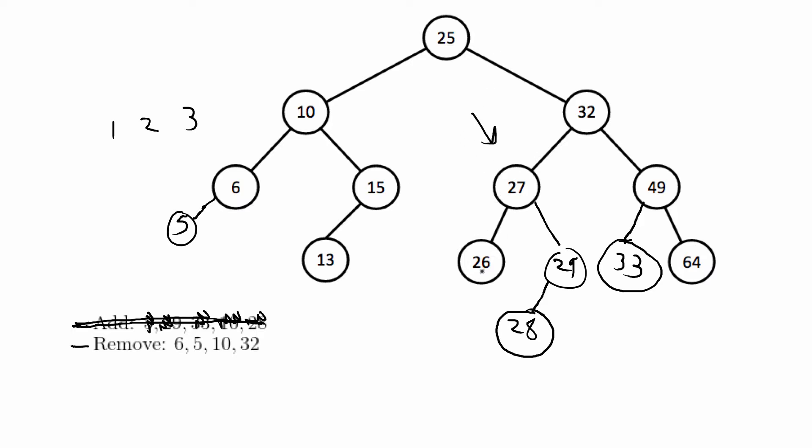You can either bump up the largest child in the left subtree or the smallest child in the right subtree, and this is because we want to get a value that's always going to be smaller than the right subtree.